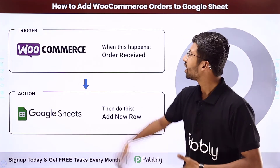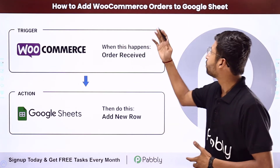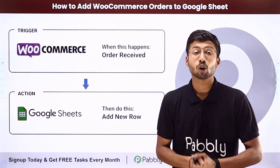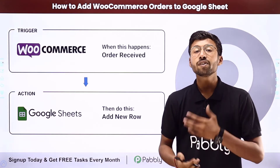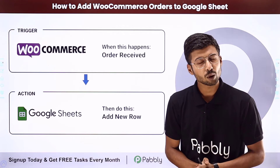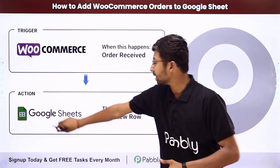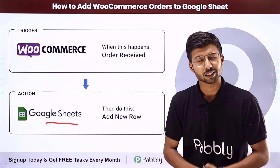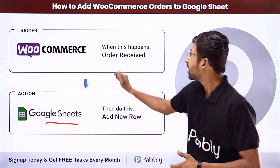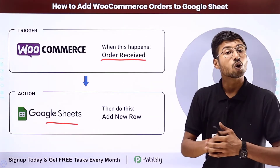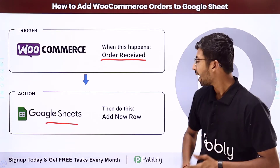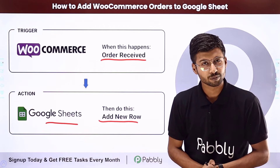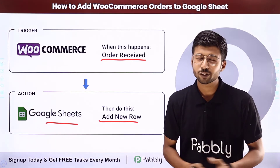In this video we will learn how to add WooCommerce order details to Google Sheets. If you are a WooCommerce store owner and you want to automatically add new order details into Google Sheets as a new row whenever you receive a new order, you can completely automate this process. The trigger will be receiving a new order in WooCommerce and the action will be adding those order details to Google Sheets.